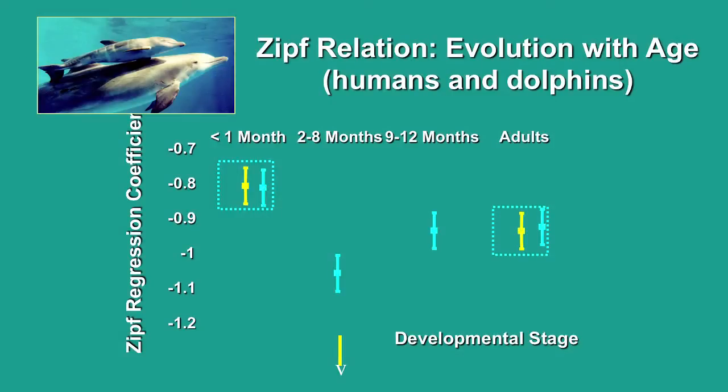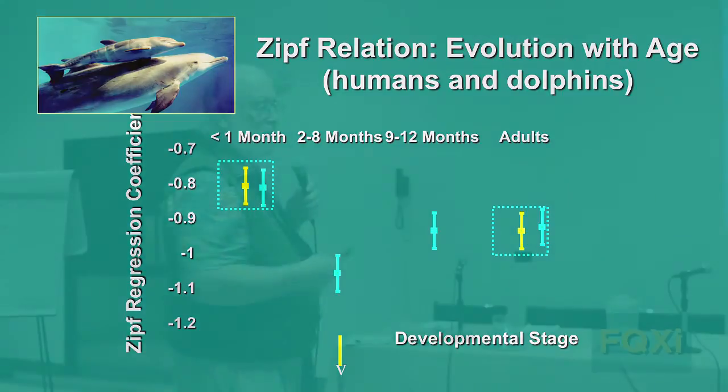Then two baby bottlenose dolphins were born at Marine World. For humans, when babies are born they babble and produce a shallow slope of about minus 0.7 or 0.8. It turned out that the baby dolphins were also babbling their whistles — they produced a slope that was not Zipf's slope. As they grew up, we saw them go from minus 0.7 to 0.8, and then humans become very redundant, going up to about minus 1.4, while dolphins converged on about minus 1.1 and then minus 1 with adulthood. In other words, we determined that baby dolphins are born babbling.